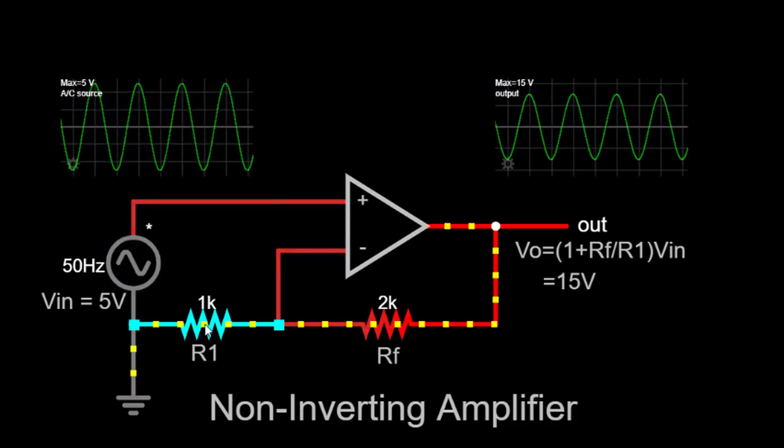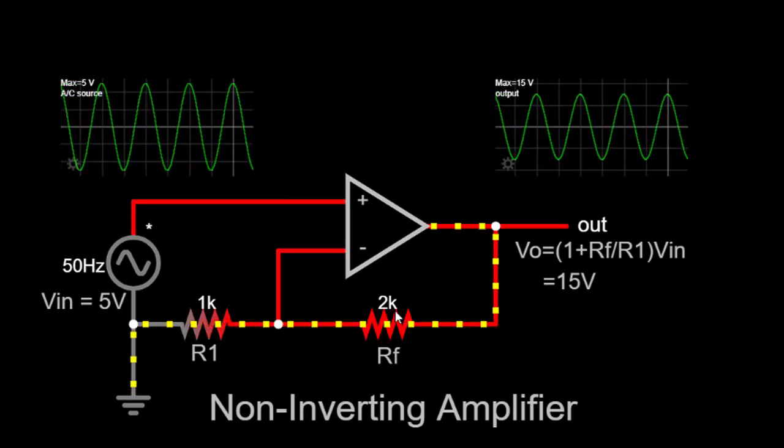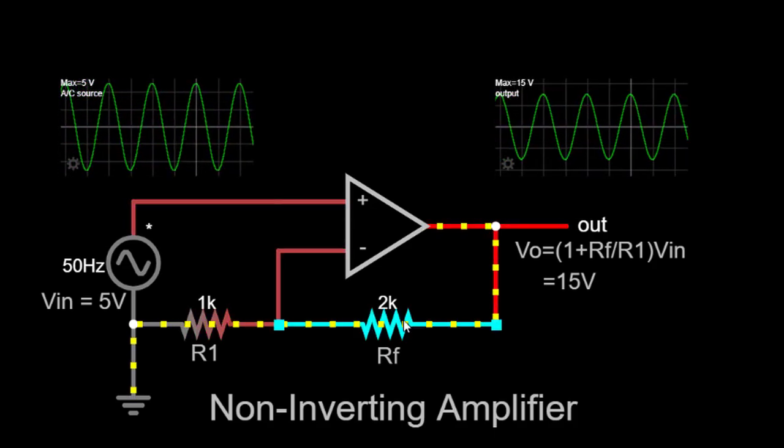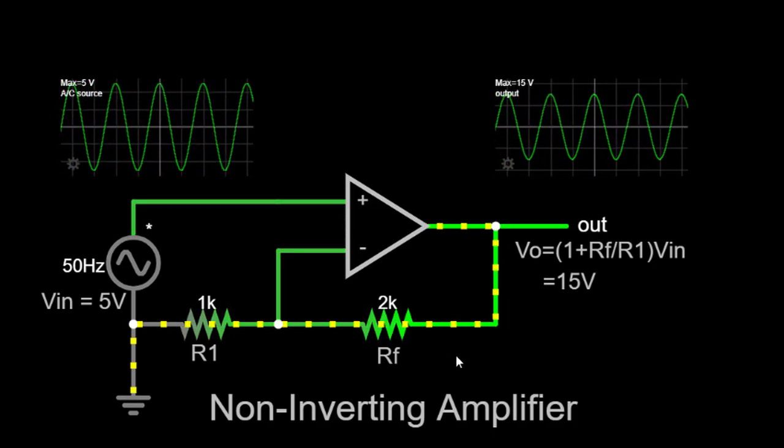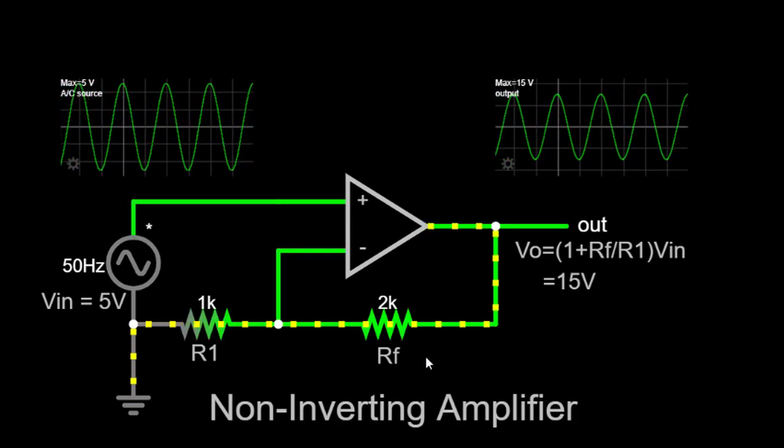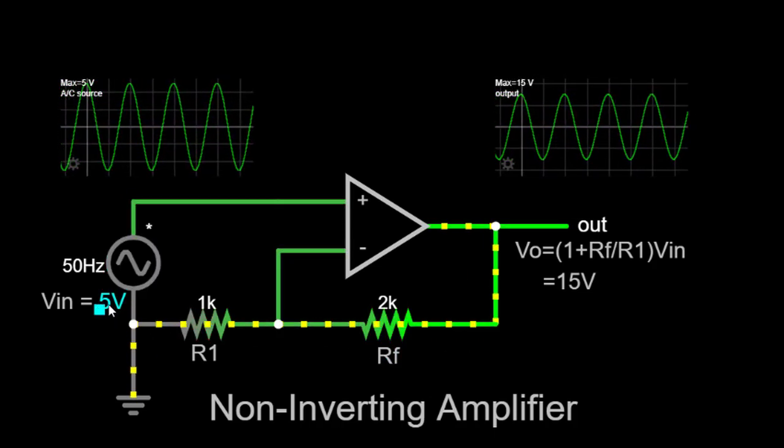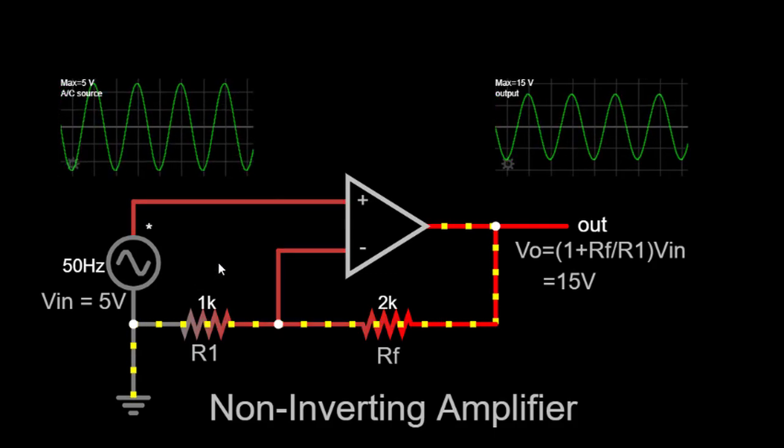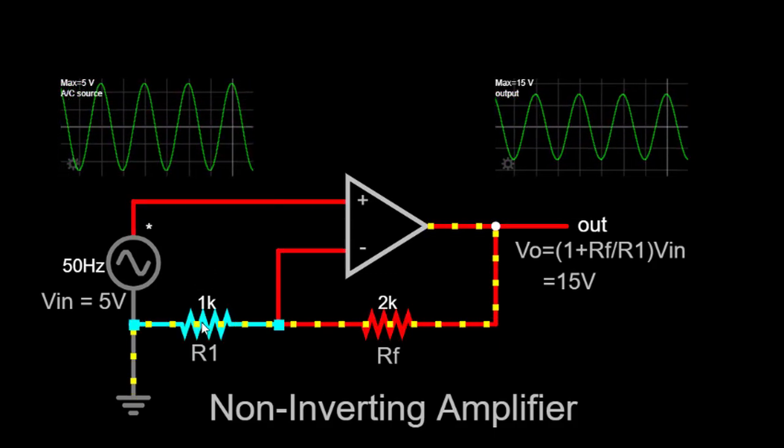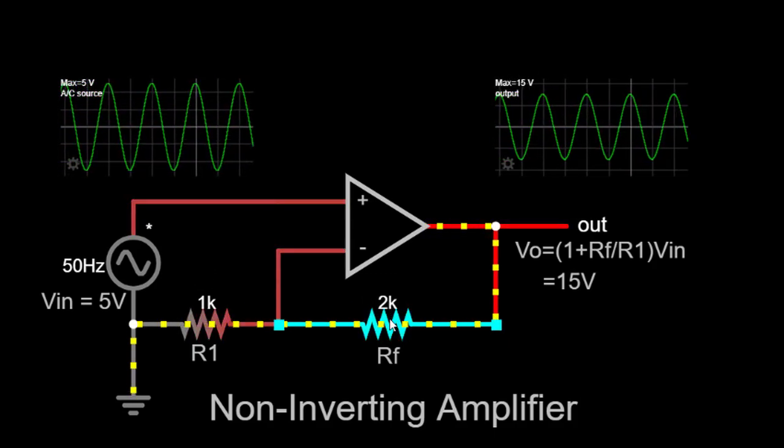In this case, we have used a 1kΩ input resistor and a 2kΩ feedback resistor. As you can see on the simulator screen, we have set the input voltage to 5V AC at a frequency of 50Hz.